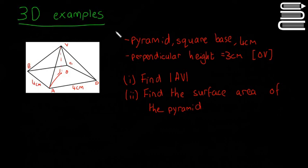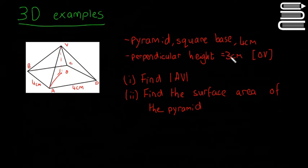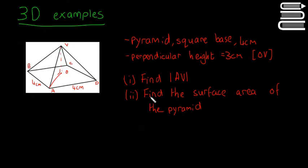In the last video we looked at a problem with the cube, and in this video we're going to look at a problem with the pyramids. These are two shapes that come up quite often because you can break them up really easily into triangles. This pyramid has a square base of 4 centimeters on each side, and the perpendicular height is 3 centimeters. We need to find the length of AV — from the top point V down to point A — and then find the entire surface area of the pyramid.